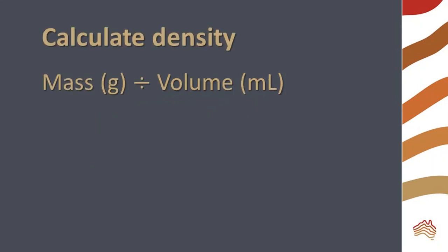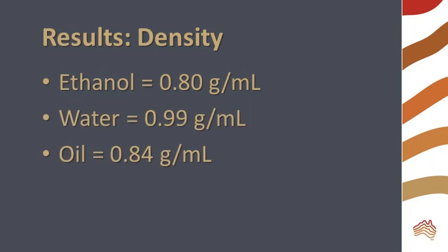Now you can calculate the density by dividing the mass by volume. I used 80 milliliters of each liquid and here are my results. You can see that the water has a higher density than the other liquids.